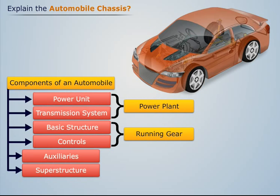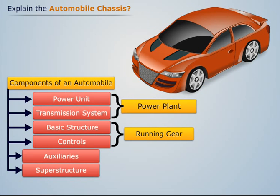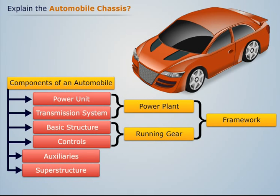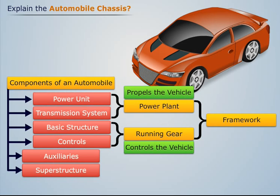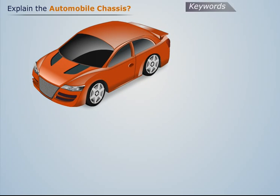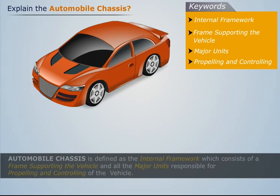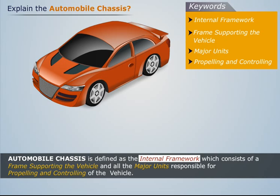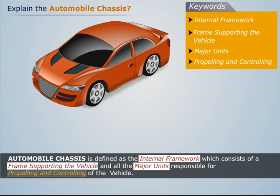The power plant and running gear combine to form a framework consisting of all the units required to propel and control the vehicle. This framework is known as the automobile chassis. Thus, automobile chassis is defined as the internal framework which consists of a frame supporting the vehicle and all the major units responsible for propelling and controlling the vehicle.